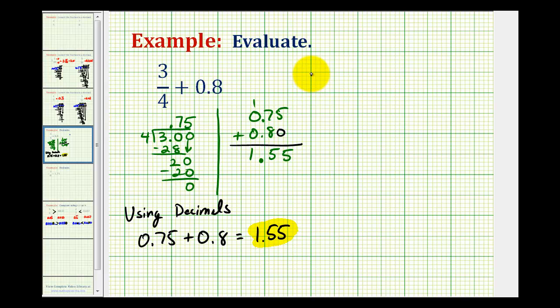Now let's find the sum using fractions. To do that, we'll have to convert zero point eight to a fraction. Well, if we know our place values, zero point eight would be read as eight tenths, which would be eight over ten.